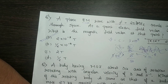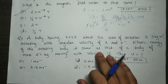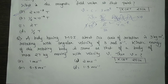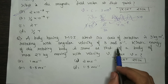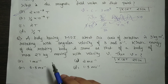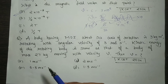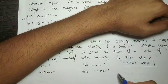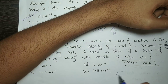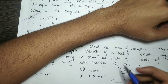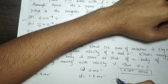A body having moment of inertia about its axis of rotation 3 kg·m² rotating with angular velocity of 3 radians per second. The kinetic energy of this rotating body is the same as that of a body of mass 27 kg moving with velocity v. The ring is rotating along its axis of rotation.